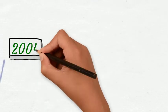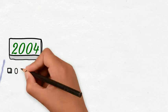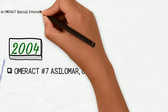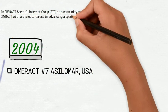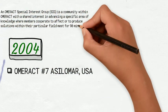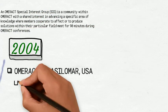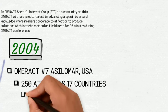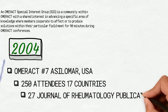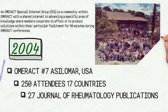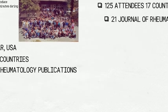OMERACT's seventh conference held in Asilomar, USA in 2004 included many new programs, including adding a full day to accommodate a new session format called Special Interest Groups, covering a broad range of topics. A discussion on next steps in defining low disease activity in rheumatoid arthritis took place, and further progress was made in imaging and ankylosing spondylitis and rheumatoid arthritis. There were also sessions on psoriatic arthritis and drug safety.